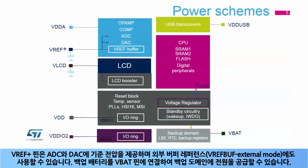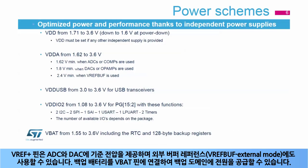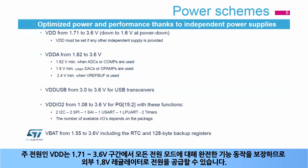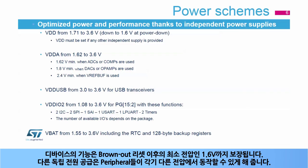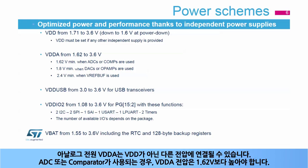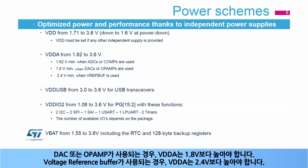A backup battery can be connected to the VBAT pin to supply the backup domain. The main power supply VDD ensures full feature operation in all power modes from 1.71 up to 3.6 volts, allowing it to be supplied by an external 1.8 volt regulator. Device functionality is guaranteed down to 1.6 volts, the minimum voltage after which a brownout reset is generated. Other independent supplies allow peripherals to operate at a different voltage. The analog power supply VDDA can be connected to any voltage other than VDD. When ADCs or comparators are used, VDDA must be greater than 1.62 volts.